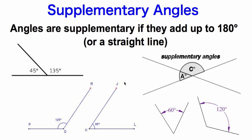Next, we have supplementary angles. Supplementary angles are angles that add up to 180 degrees or a straight line. We have some examples here. We have a straight line and two angles, 45 and 135, that will add up to 180 to make that straight line.